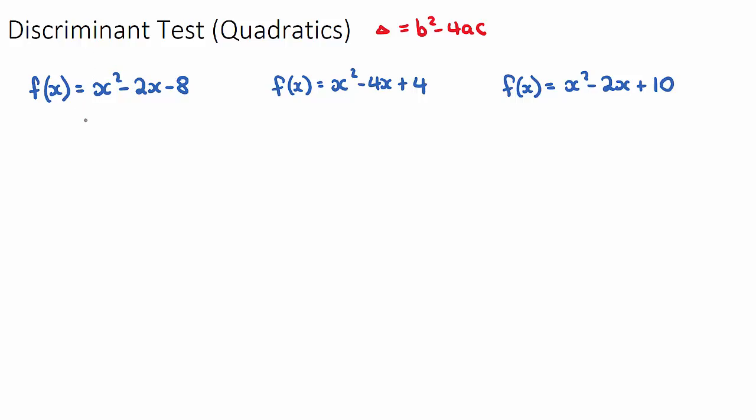For our first question, let's label what our a, b, and c are. a is always the coefficient of x squared, which will be one for this one. b will be the coefficient of x, which is negative two, and c will be our constant negative eight.